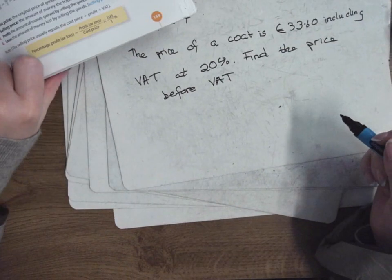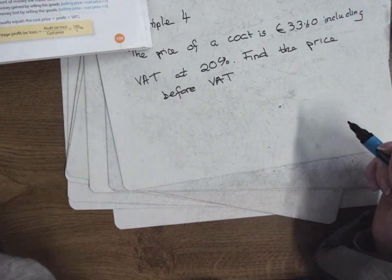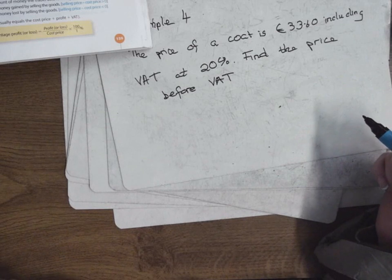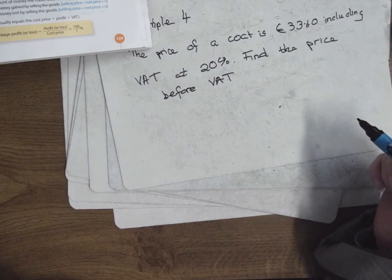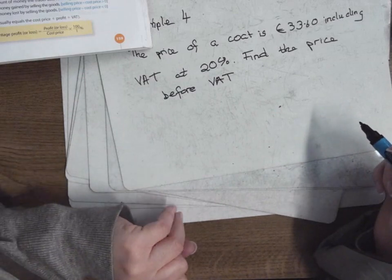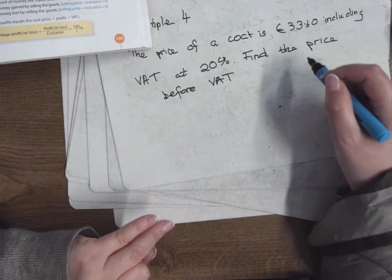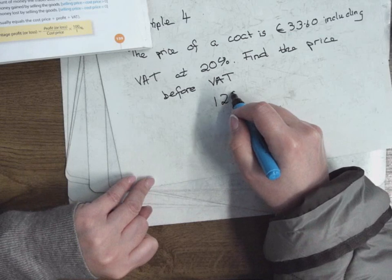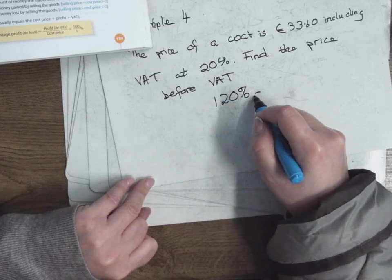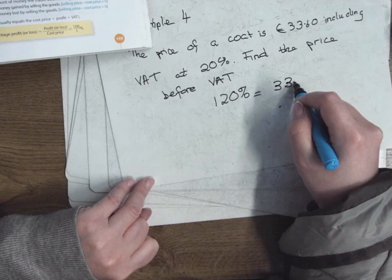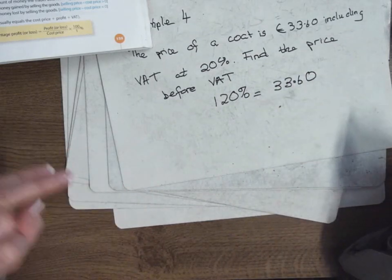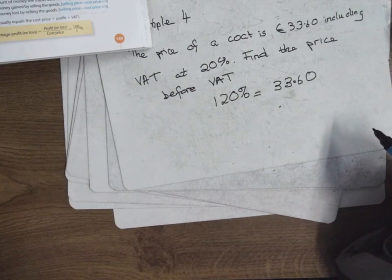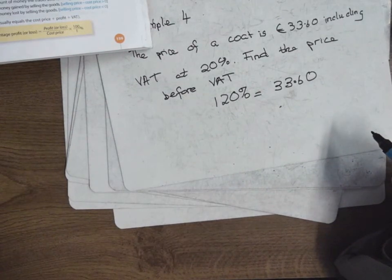So we have the final price of the coat. What percentage is the final price? It started at 100% then they put on 20% VAT, so what percentage is the final amount? It was 100 and they added on 20 VAT, so what percentage? 120. So 120% is equal to €3360, and I'm looking for the price before the VAT. What percentage am I looking for?